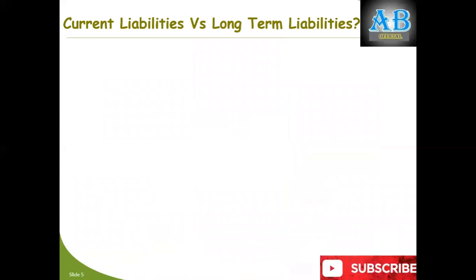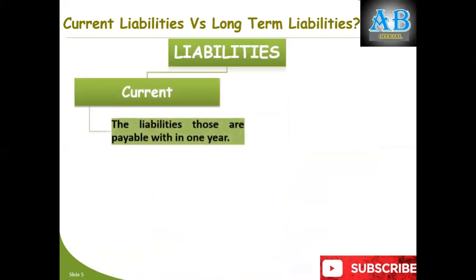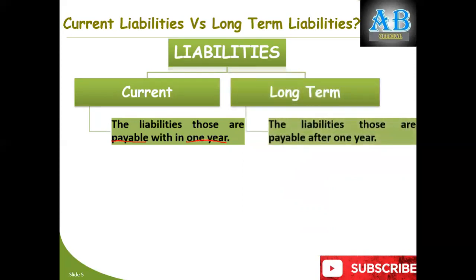What is the distinction between current liabilities and long-term liabilities? Current liabilities are those payable within one year. Any obligation or liability which is payable within one year is called a current liability. For example, if today is 10th June 2020 and you are supposed to pay any obligation by 10th June 2021, then it is your current liability. But a liability which is payable after one year is called a long-term liability, also known as a non-current liability.